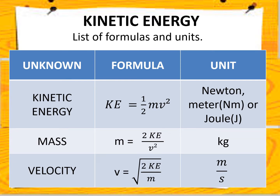If the unknown is kinetic energy, you use the formula KE equals one half mv squared. However, if the unknown is mass, you use m equals 2KE divided by v squared, and the unit should be kilograms. When you would like to get for the velocity, the formula is the square root of 2KE divided by m, and you should be getting the unit meters per second.